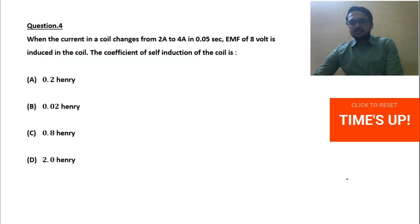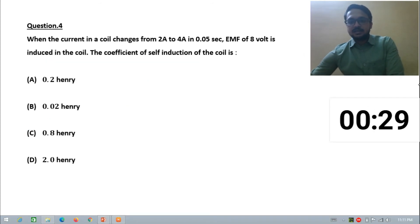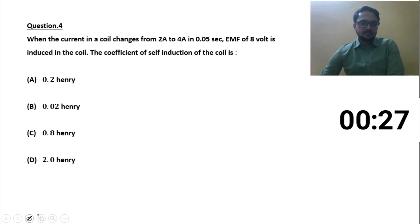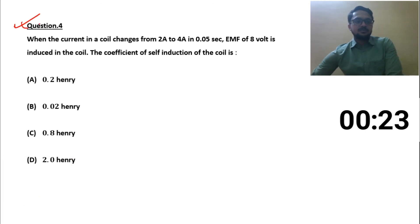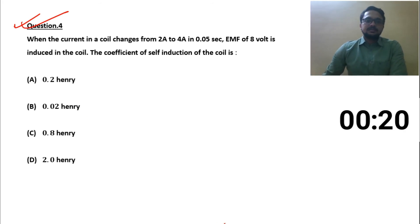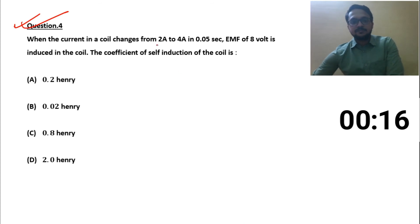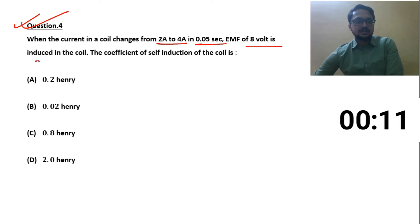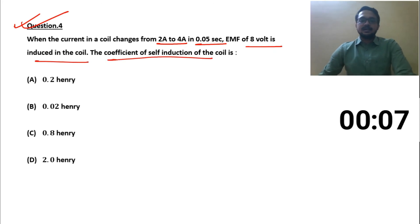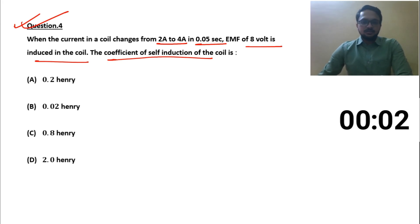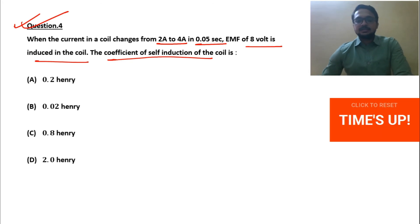Going to the next question — question number four. Your timer has started. When the current in a coil changes from 2 ampere to 4 ampere in 0.05 second, an EMF of 8 volt is induced in the coil. You have to find the coefficient of self-inductance. Very easy, direct formula-based question. Time's up.